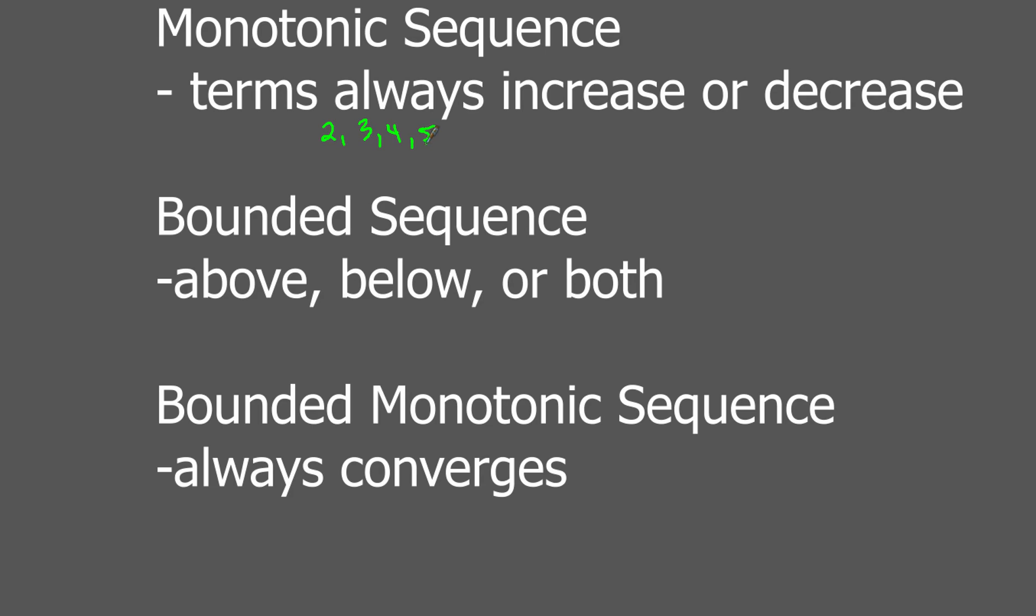So that's always going to be increasing. Likewise, if you had one that decreased all the time, say you had 7, and then 6, and then 5, and 4, and it kept going, that is always decreasing. So that sequence would be monotonic.